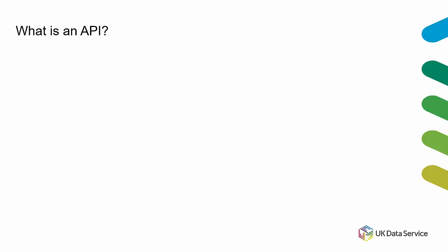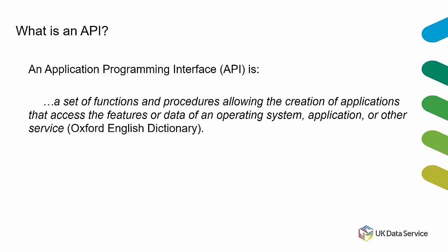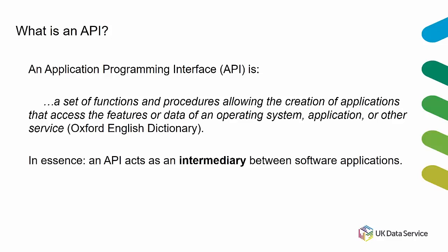So what is an API? It might be an unhelpful acronym. Officially, an application programming interface is a set of functions and procedures that allow the creation and access of the features or data of an operating system, application, or other service. In essence, an API acts as an intermediary between two or more software applications.